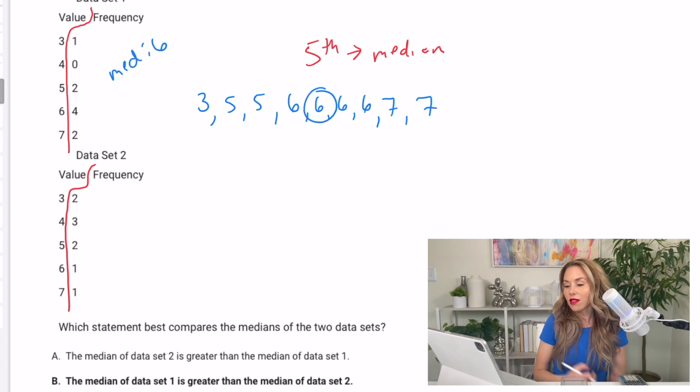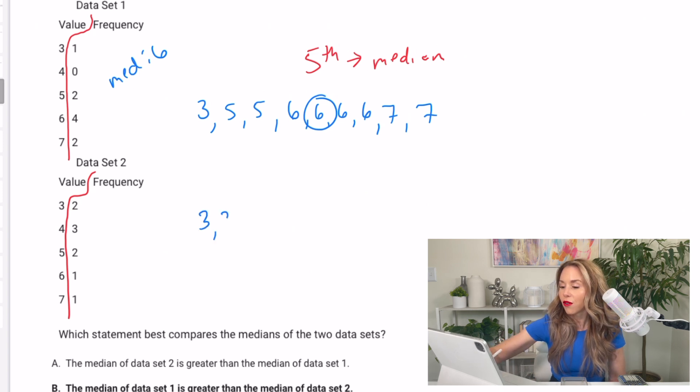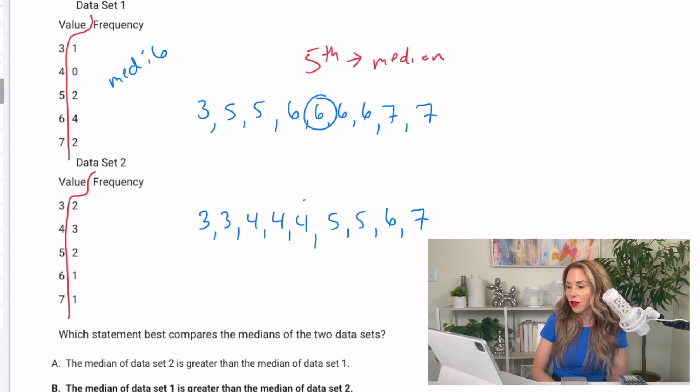Now, when you go ahead and you list out for data set two, the values, you've got three twice, four three times, five two times, six one time, and seven one time. So you have four in the middle in that set. So it looks like the median of data set one is greater than data set two. The answer is B.